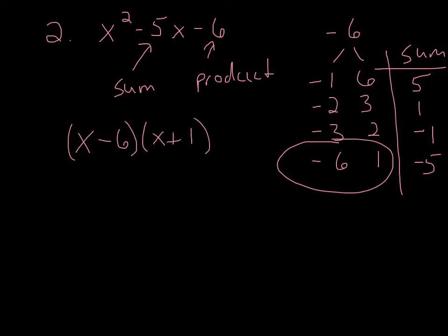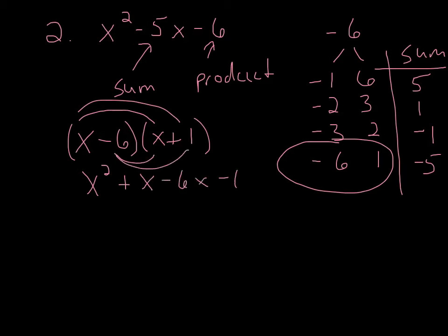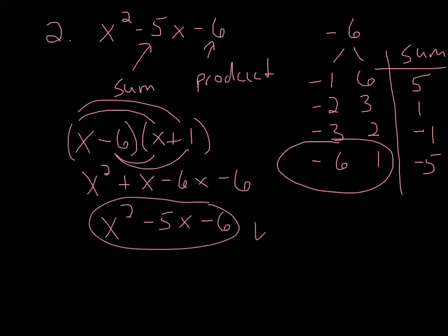Now let's multiply back out to check. Using FOIL: x² + x − 6x − 6, which gives x² − 5x − 6, and we are good to go. There is our solution. Let's move to the next one.